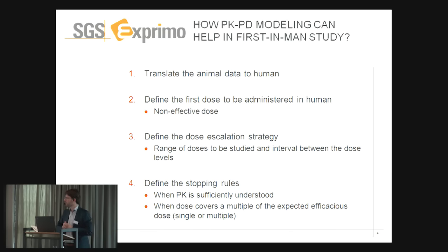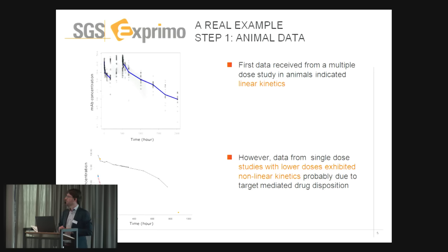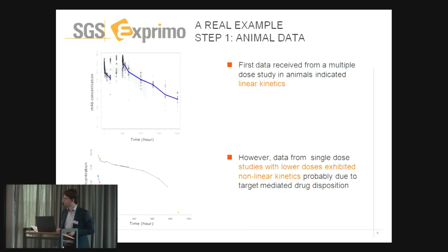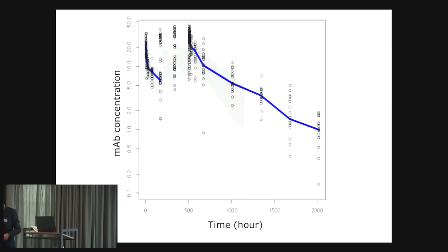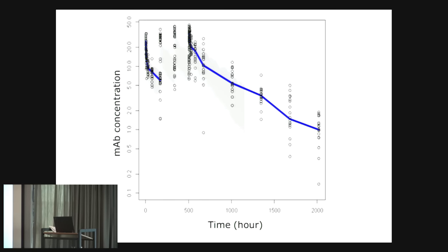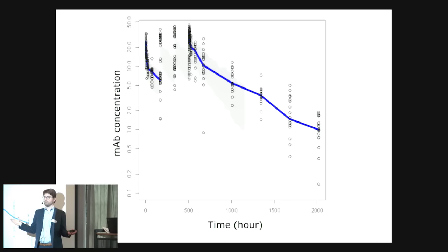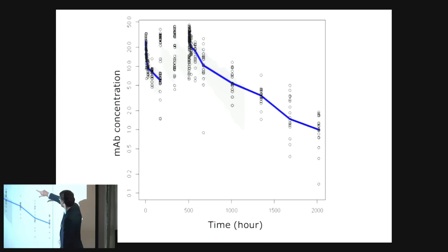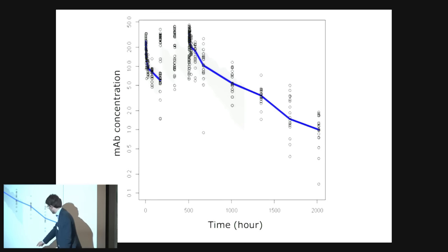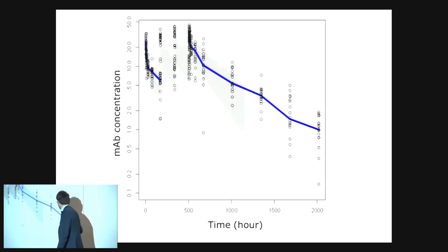Let's go through this journey that we actually did for a client. We got animal data, and I want to zoom in directly on the first graph. What we see is actually very nice: we've administered the compound, which is a monoclonal antibody, and through time, after several administrations, we have a very nice, just linear elimination. You can even, just by eyeballing it, see that the half-life is about 700 hours.